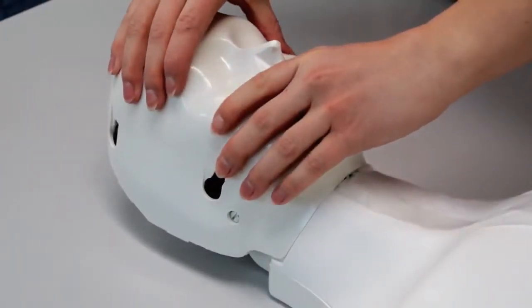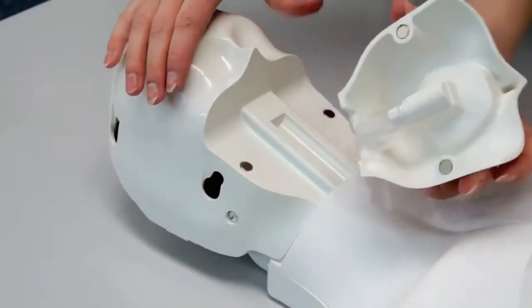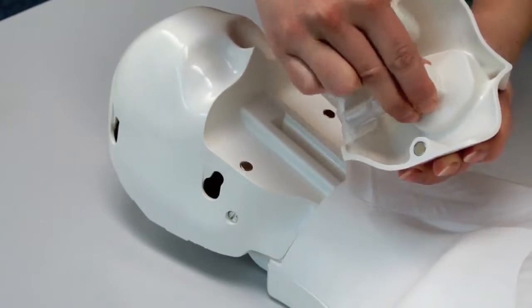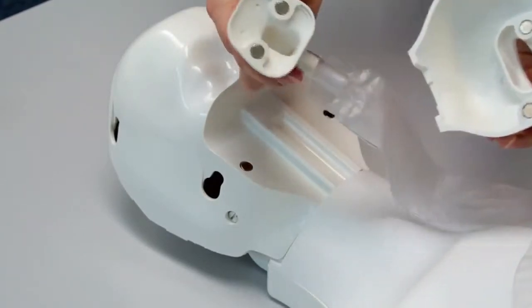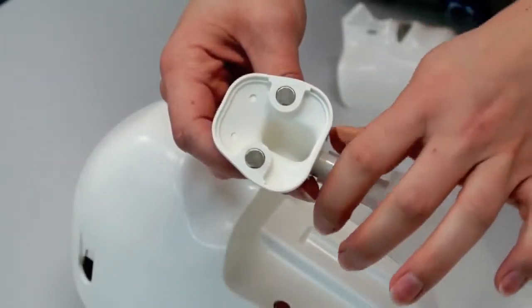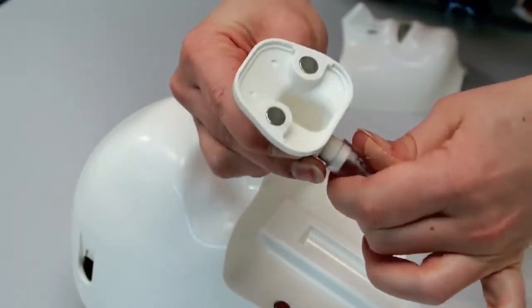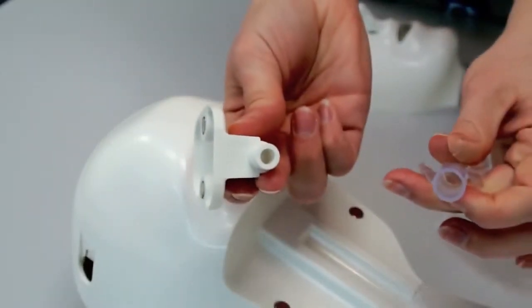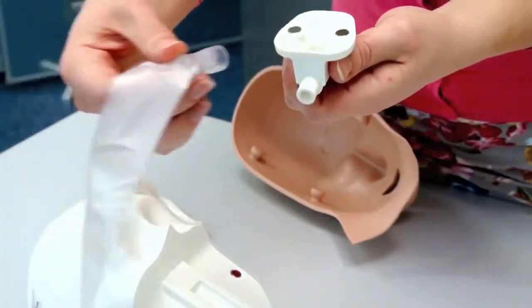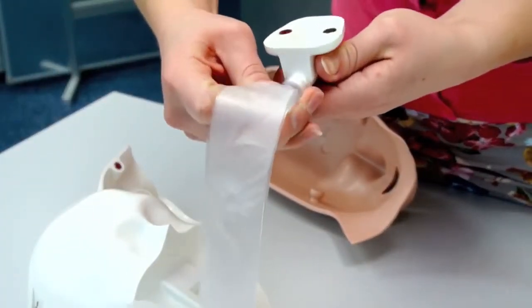To detach the lung bag from the lung bag socket, you need to remove the jaw insert. Replace the used lung bag with a new one and reattach the lung bag socket to the jaw insert.